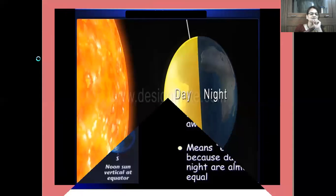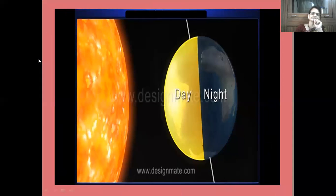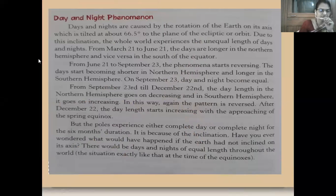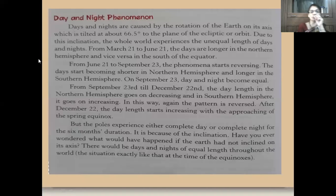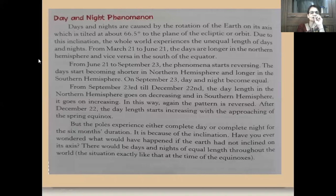Now we move towards the phenomena of day and night. Days and nights are caused by the rotation of the earth on its axis, which is tilted at about 66.5 degrees to the plane of the elliptical orbit. Revolution causes the seasons. Due to this inclination, the whole world experiences unequal lengths of days and nights.